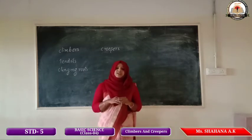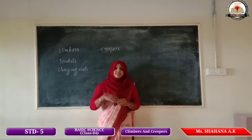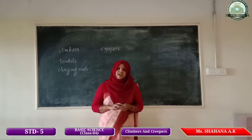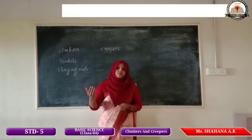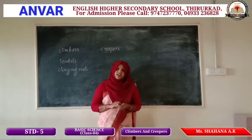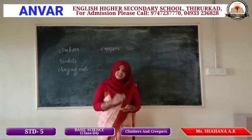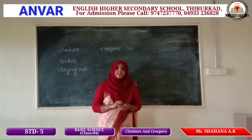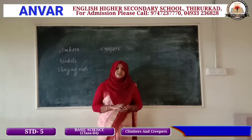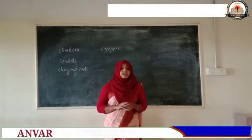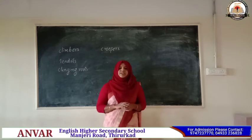So first we have studied about two types of plants: climbers and creepers. Climbers are weak-stemmed plants that grow on other plants with the support of tendrils or clinging roots. Creepers are another group of weak-stemmed plants that creep on the ground. I am giving an activity — you have to find more examples for climbers and creepers.